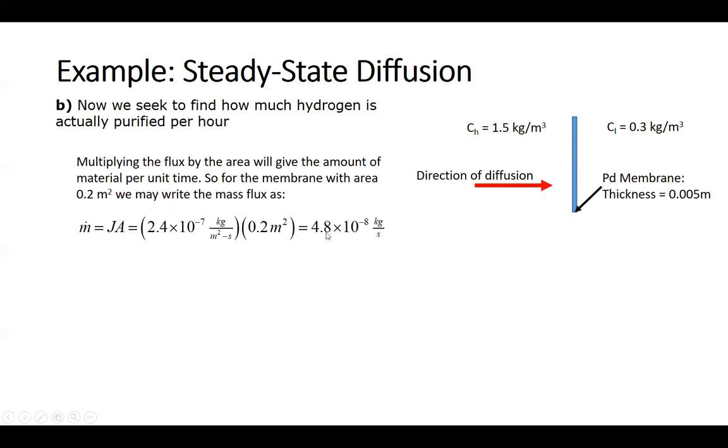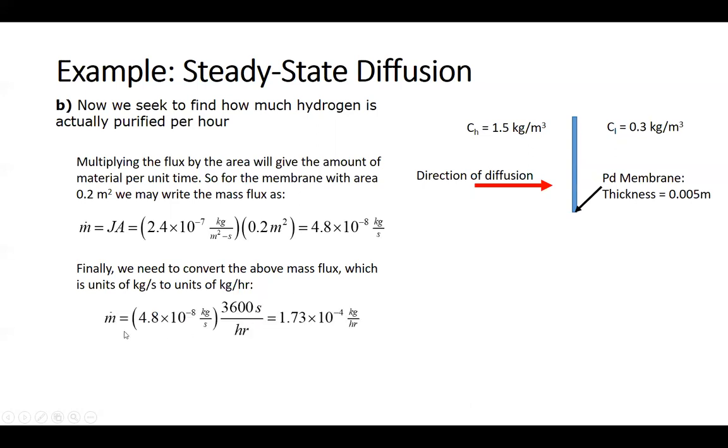We plug in our values and we end up with a mass flow rate of 4.8 times 10 to the minus 8 kilograms per second. Now we just need to convert this mass flow rate to units of kilograms per hour. This is easy to do, just multiply by 3600. We find that our mass flow rate per hour is 1.73 times 10 to the minus 4 kilograms per hour.